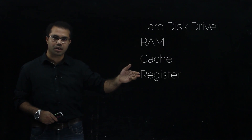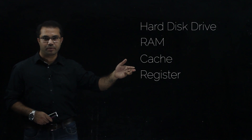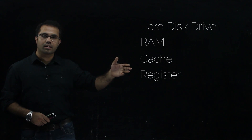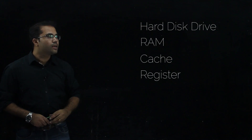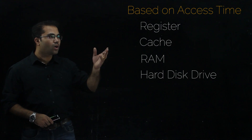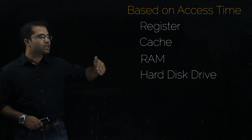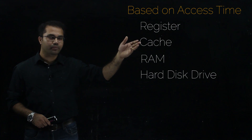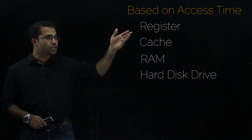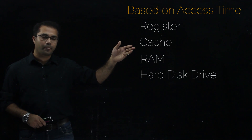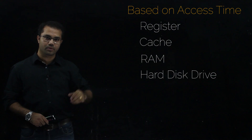These devices are ordered based on their storage capacity. But if we take access time as a priority, then the order will be in reverse: the first place goes to the register, followed by the cache, then the RAM, and then the hard drive.